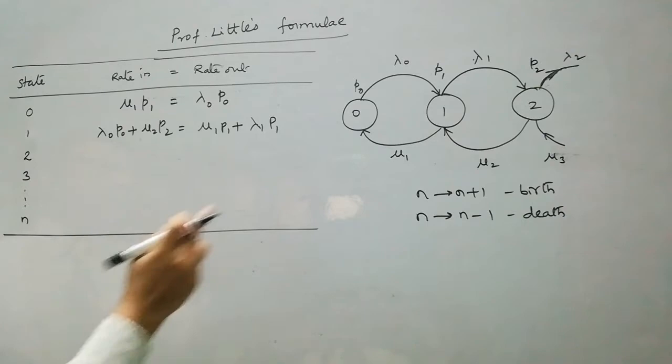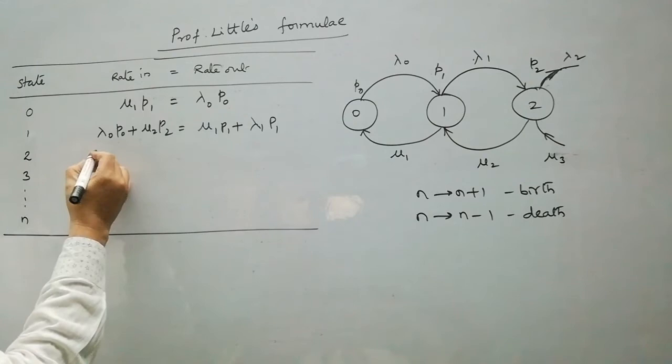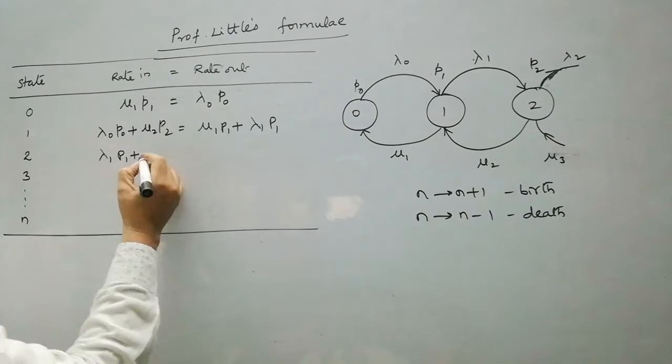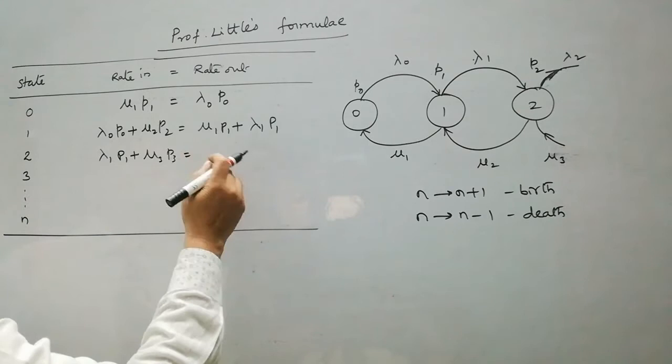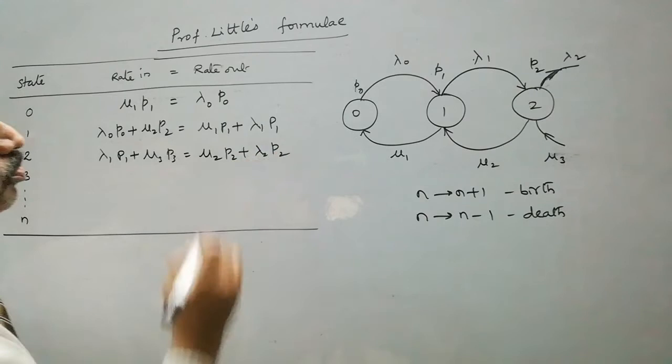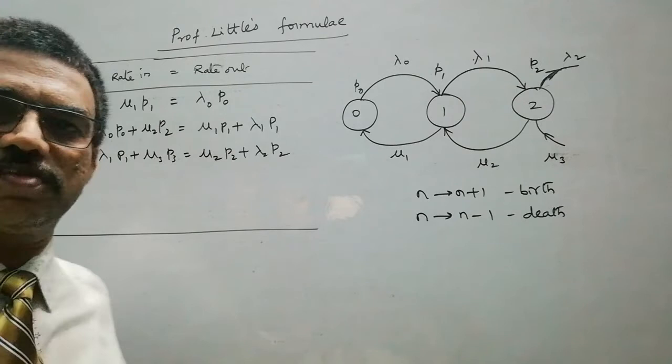Similarly, for state 2 we can write: rate in is from 1 to 2, that is λ₁P₁ plus μ₃P₃. This equals rate out: μ₂P₂ plus λ₂P₂. And so on — like this we can write for all states.